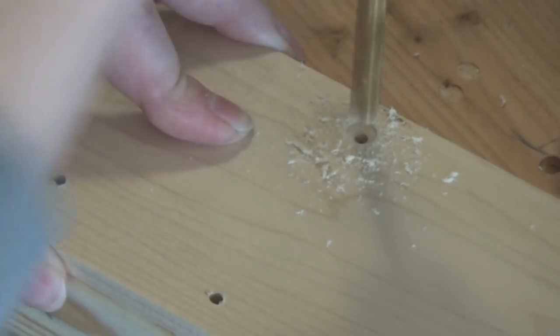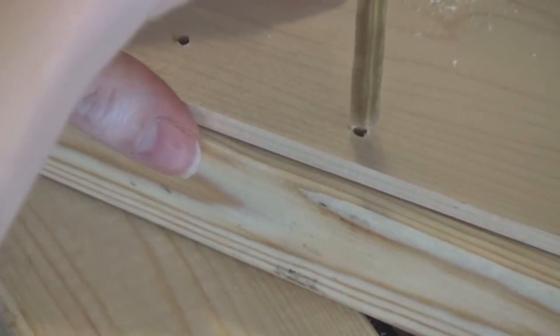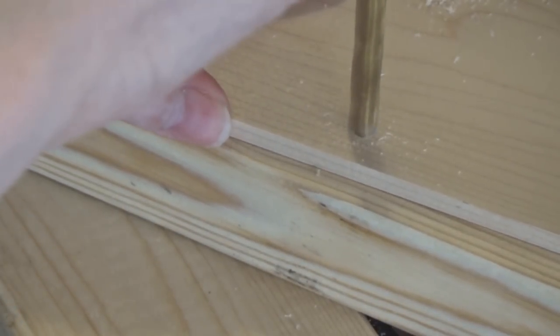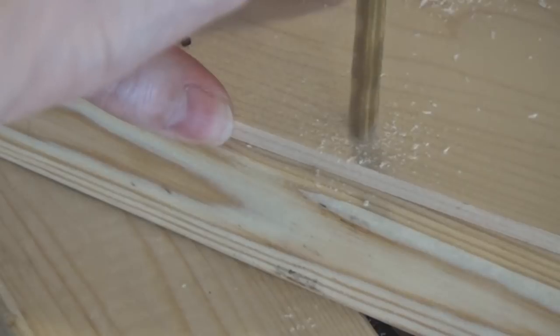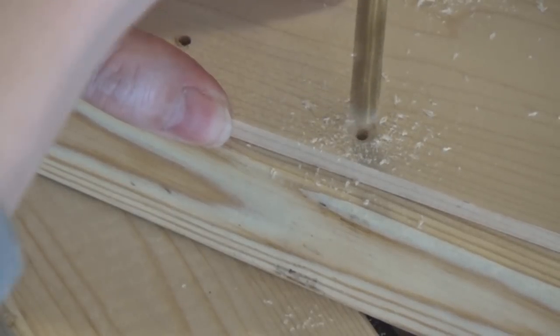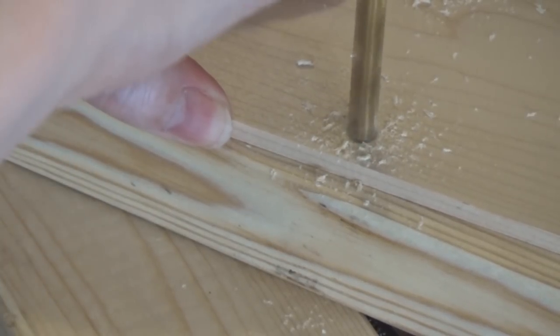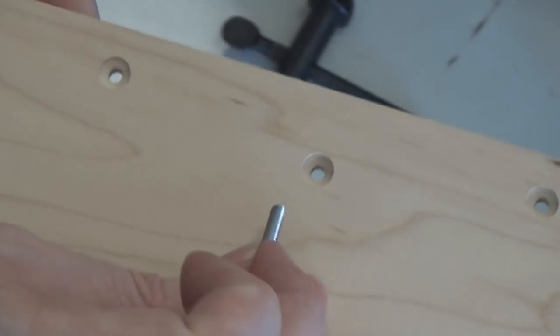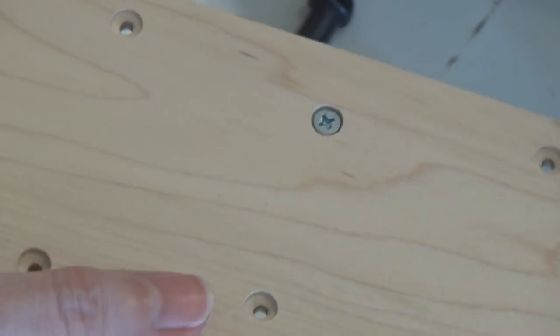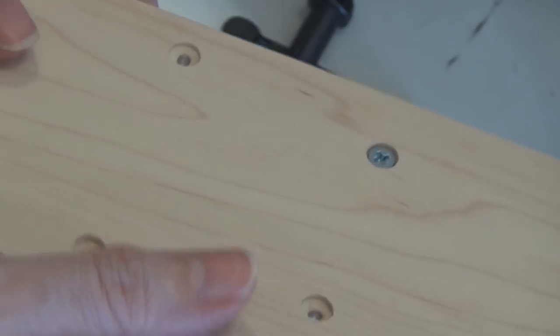Now flipping it over, on the bottom side I'm going to do some countersinks into the maple, so that when I put the screws in that they'll be flush, and there'll be nothing protruding on the bottom. I want the bottom to be completely smooth against the silkscreen jig, so that it can be adjusted very easily.